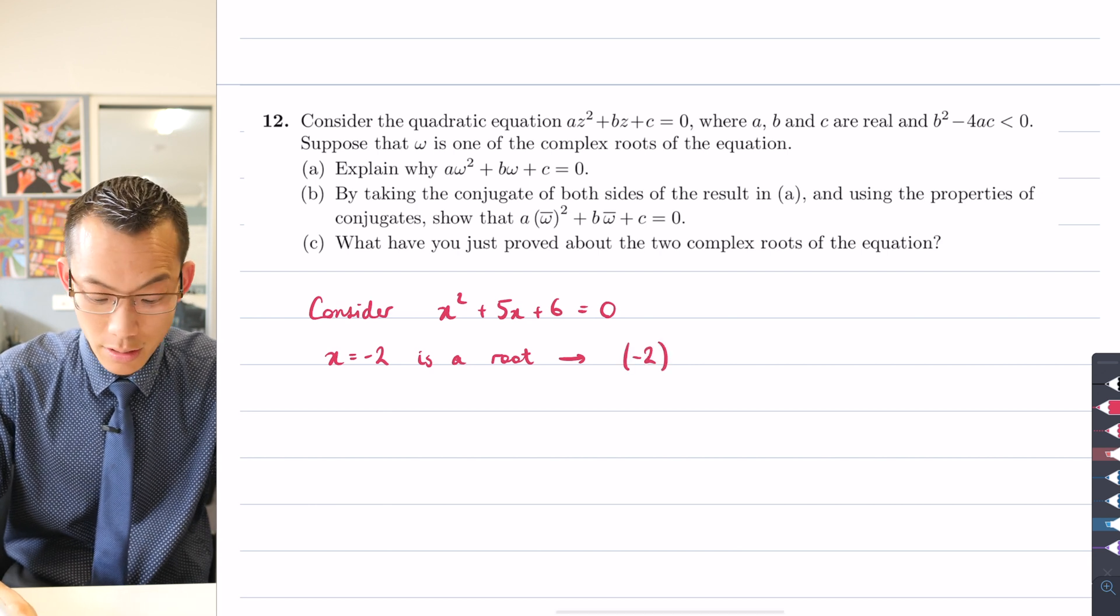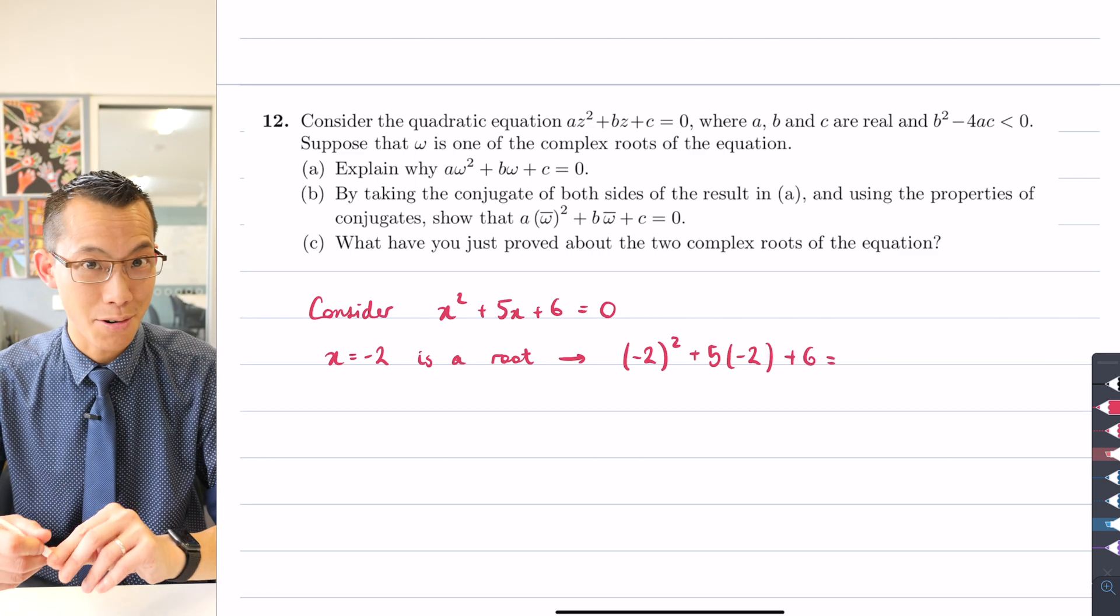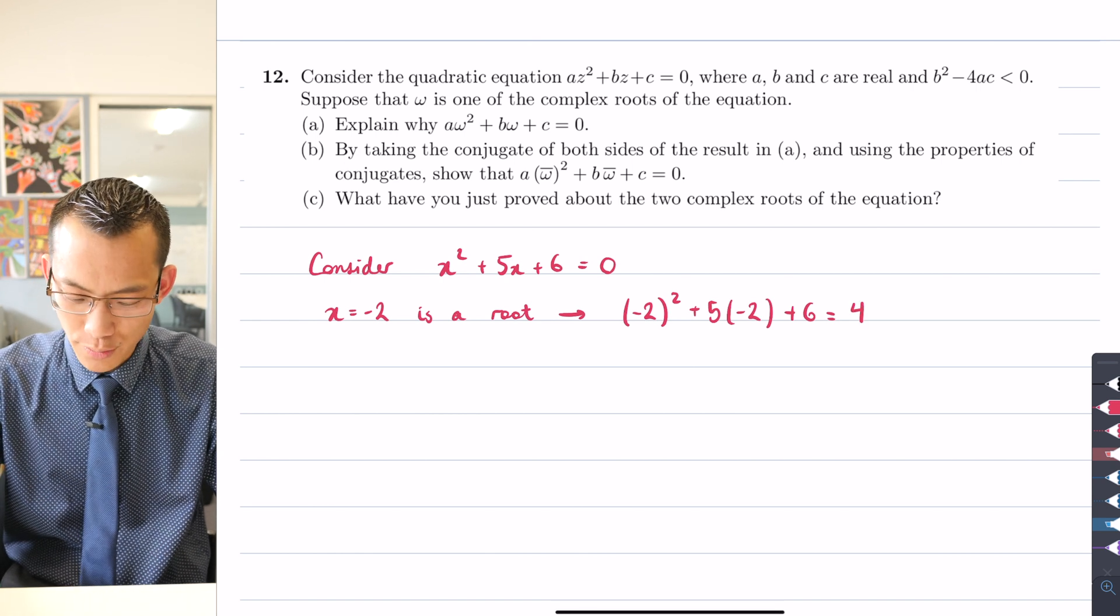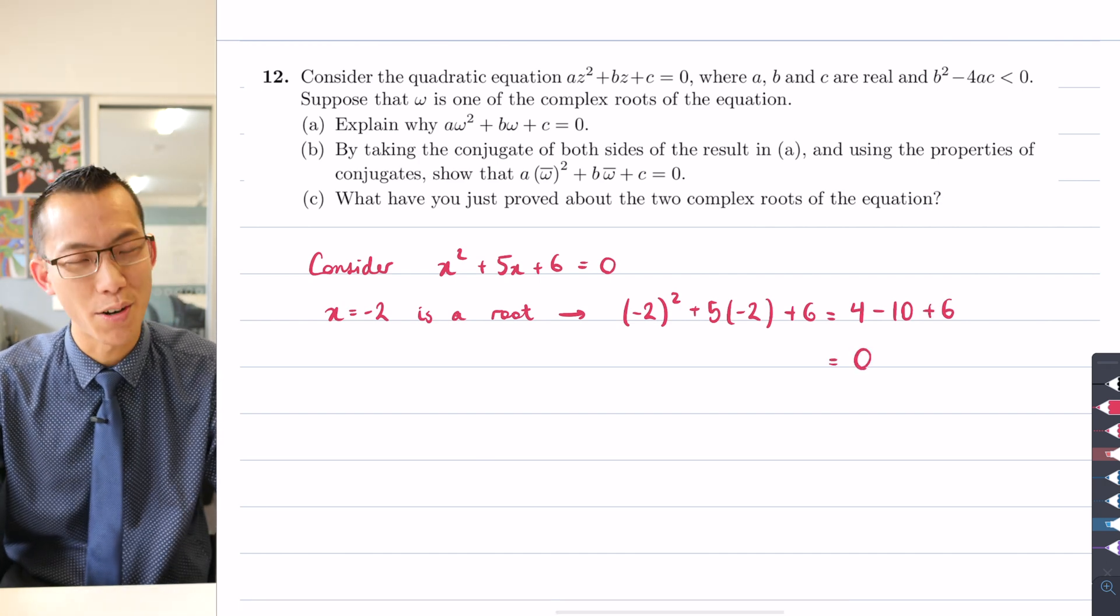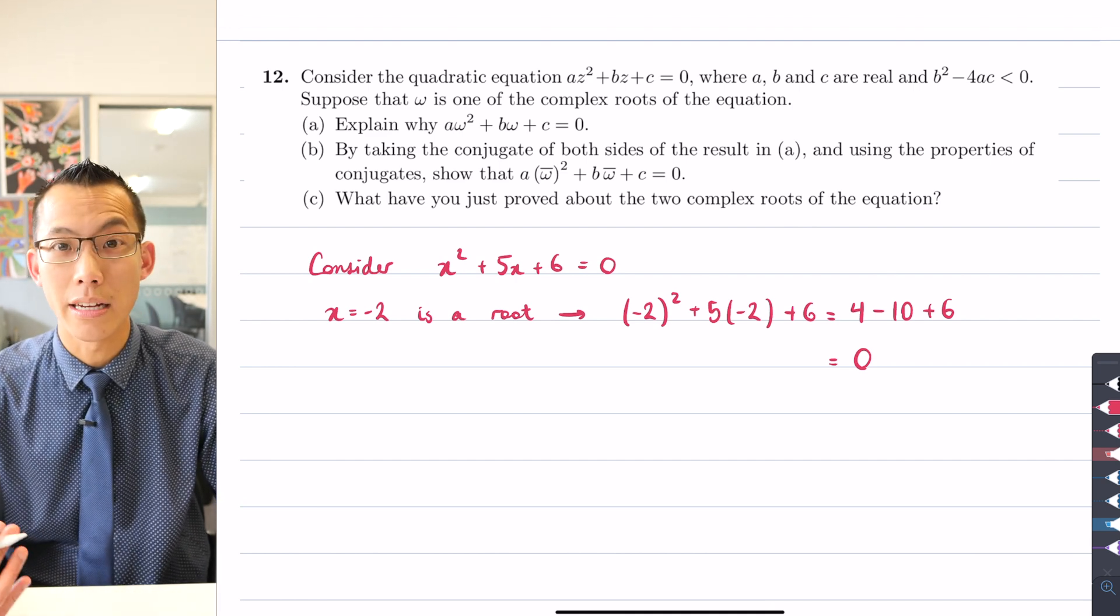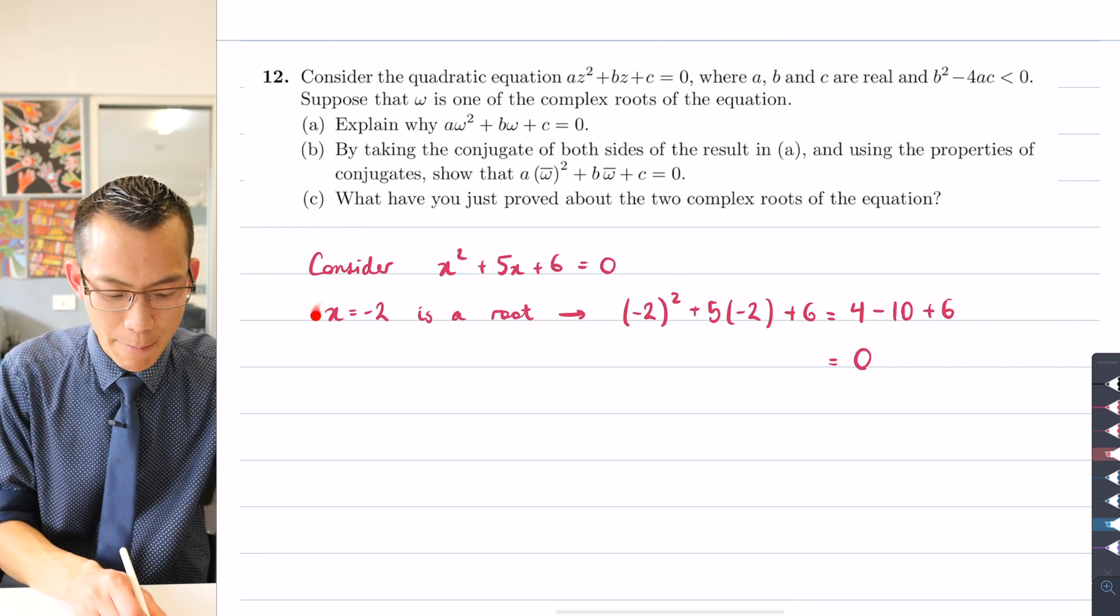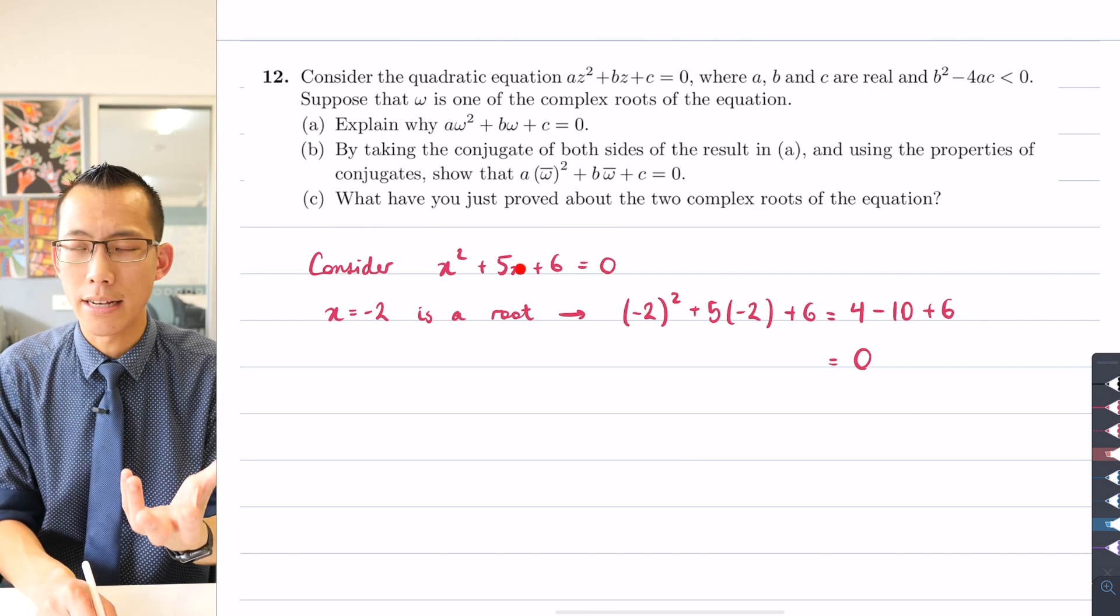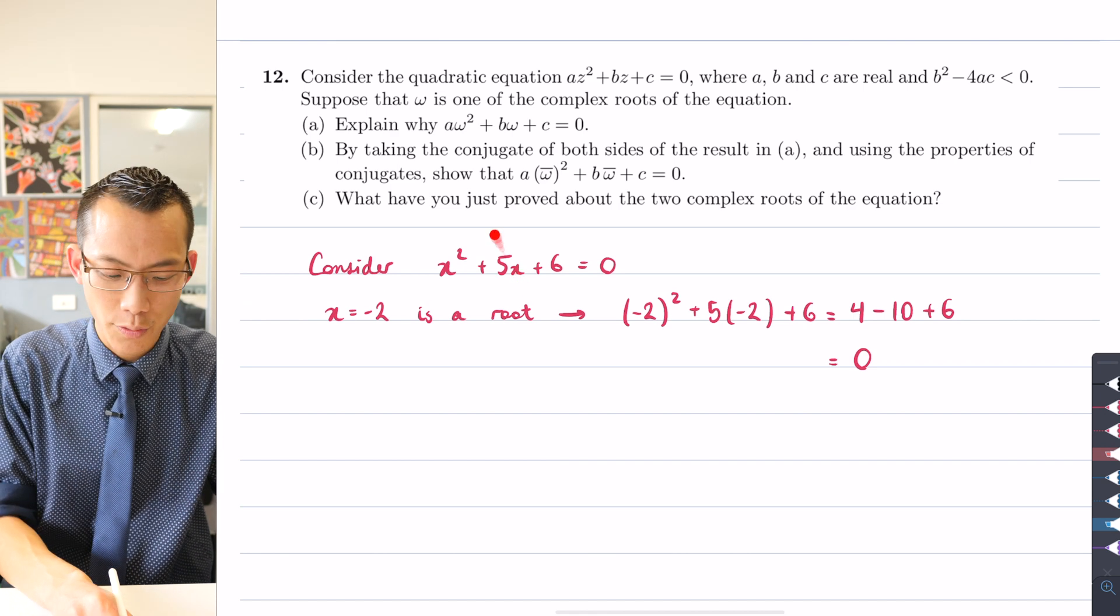If I take that -2 and then square it, I'm going to add 5 lots of -2, I'm going to add 6. Let's just go ahead and crunch the numbers on this. -2 times -2 is 4, 5 lots of -2 is -10, plus 6, and hopefully it doesn't take too much to convince yourself that that's equal to 0. And we could obviously go through exactly the same exercise for x = -3 because that's also a root. Now what that means is if you have a particular value and it's a root of your particular equation, that's another way of saying that particular value satisfies the equation you started with.